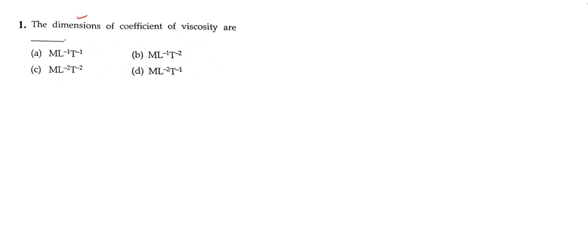Our first question is about dimensions. We need to find the dimension of the coefficient of viscosity. First we need to find the formula of viscosity, and after that we can find the dimensions. The general formula of viscosity can be written as stress divided by velocity shear rate.